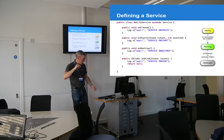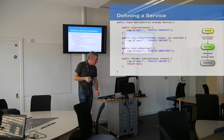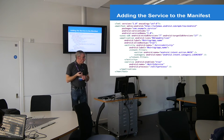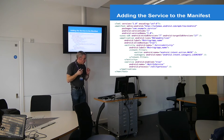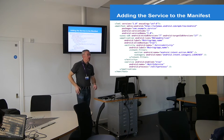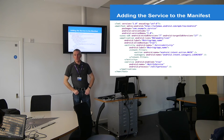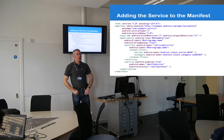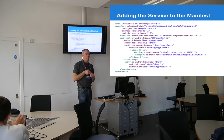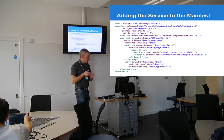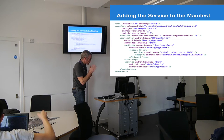The onBind method is used when you bind other applications to that service — that's how implicit intents work. In the manifest, a service entry looks just like an activity entry except you use a service tag instead of an activity tag. Apart from that it's the same: you've got your name and a process, where the process is the thread it runs on. You need to add the service to the manifest just like you add activities.